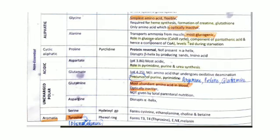Cysteine helps in the formation of coenzyme A, taurine, glutathione, and beta-mercaptoethanolamine.